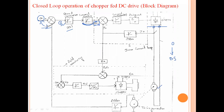The actual armature current is sensed using a current sensor at the motor armature terminal and is given to a filter. These filters are used to eliminate unwanted harmonics and unwanted ripples present in the current waveform. The actual armature current is then compared with the reference current, and a current error is generated.